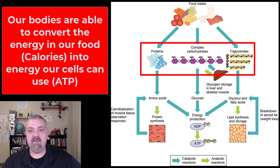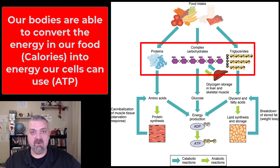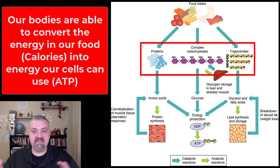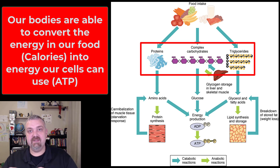So you can see here catabolically: you eat protein, you break it down to amino acids, which can then be used to produce energy. You consume carbohydrates, they can be broken down into glucose, which can be consumed for energy. You eat fat — same thing — it can be broken down for fuel to produce energy. So those are all the key catabolic reactions that lead to the transfer, the change of form, from the energy in the food we eat into the energy currency our cells can use.